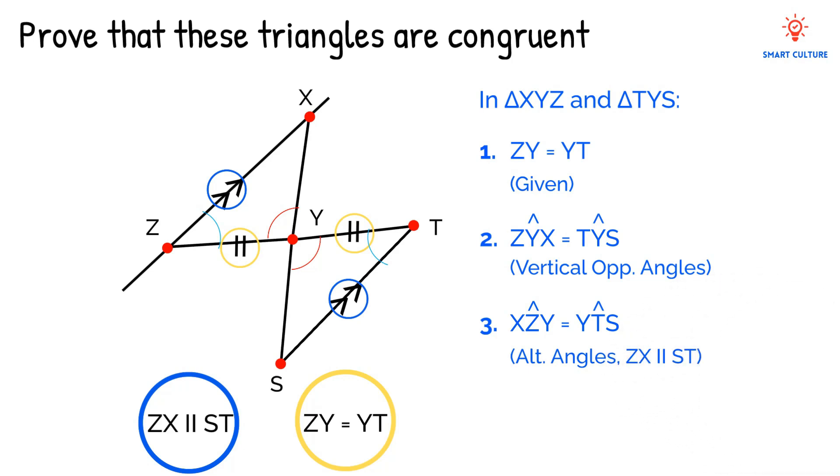We have given three statements with three reasons proving these triangles are congruent. Therefore, triangle XYZ is congruent to triangle SYT. And the reason for their congruency is AAS: angle, angle, side. They have two angles that are equal and a side.